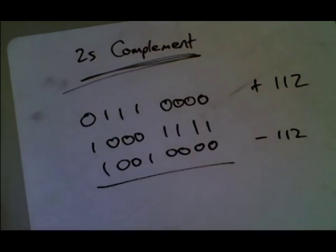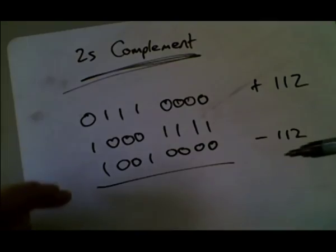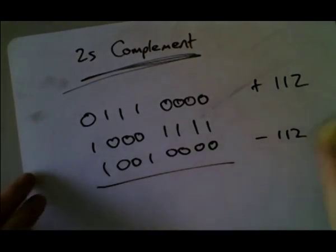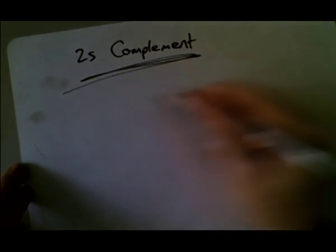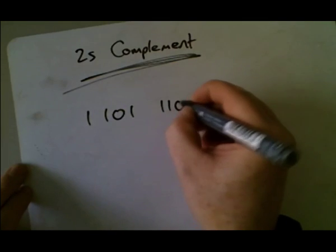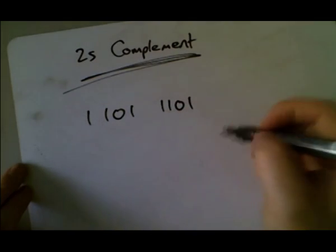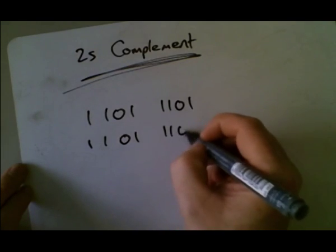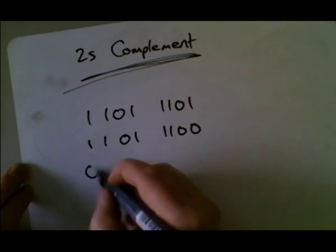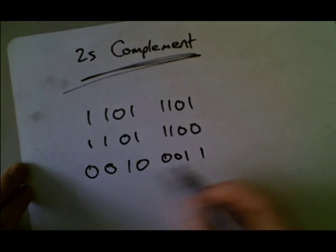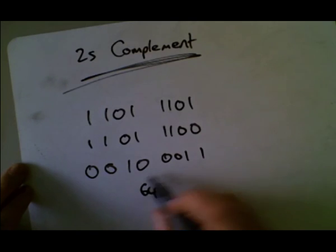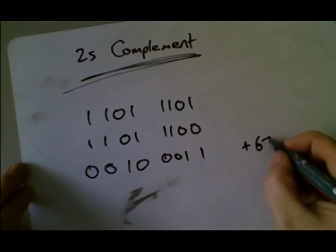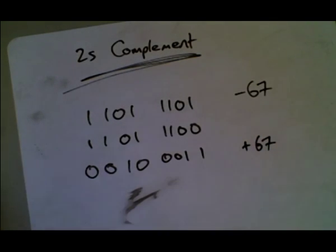You flip and add 1 to turn it into a negative number. If you want to turn it back into a positive number, let's say we've got this number here, you take 1 first, and then you flip it. And we've got 64 and 3, so that's 67. So that's plus 67, that's minus 67, and there's our 2's complement.